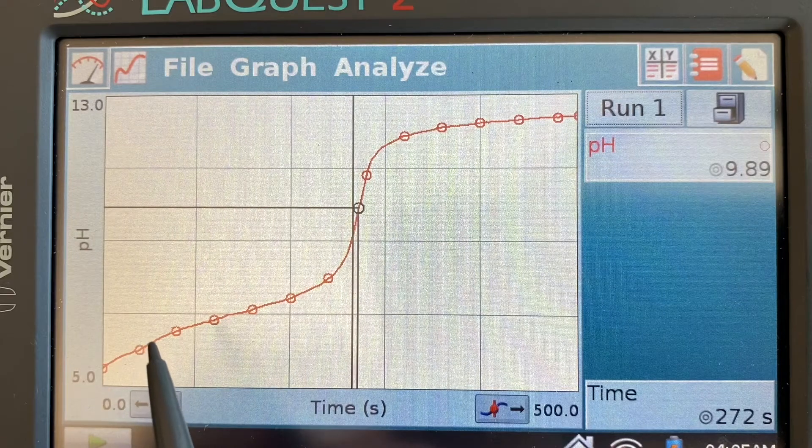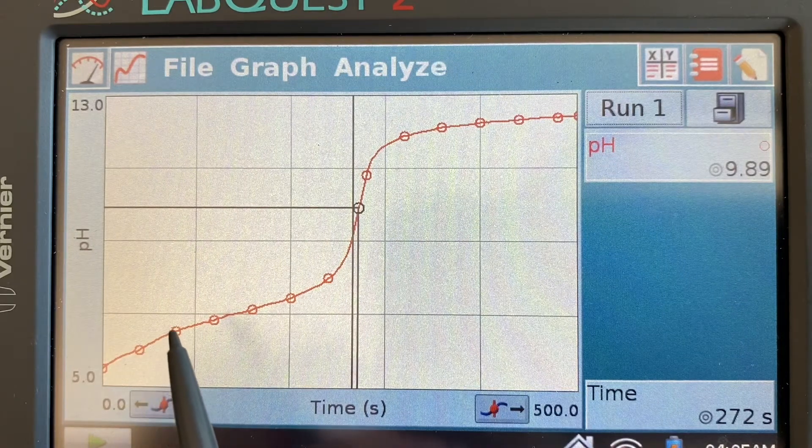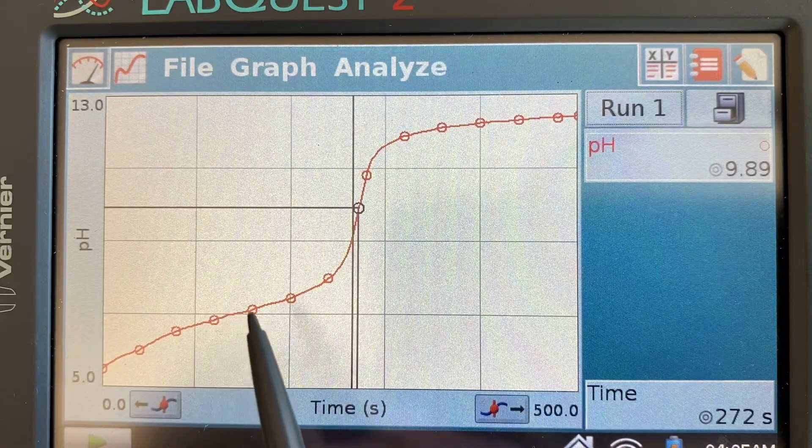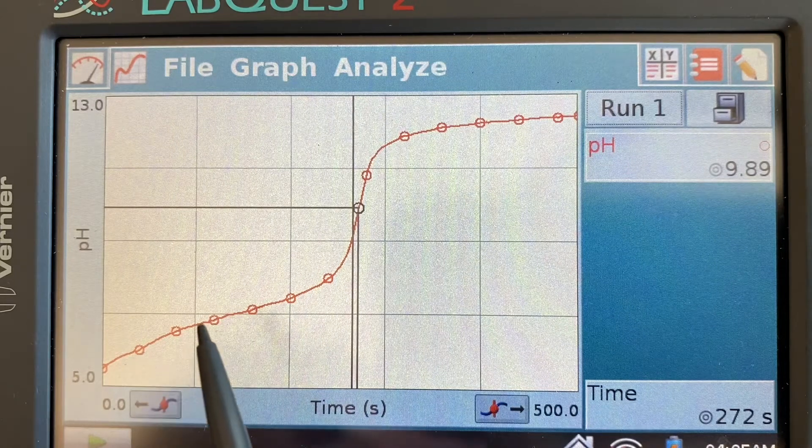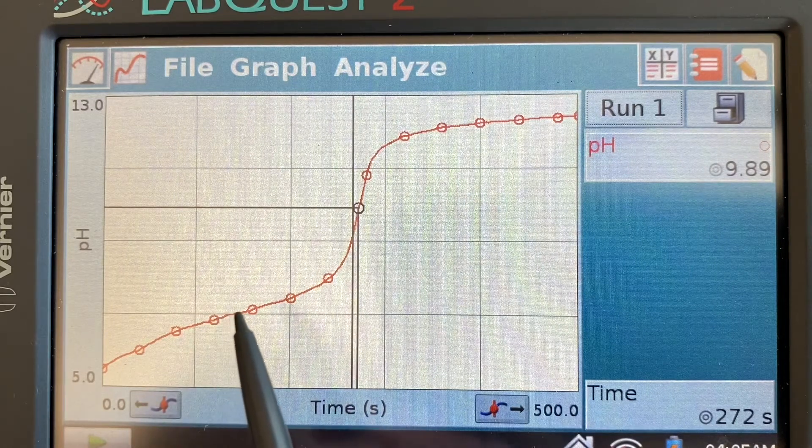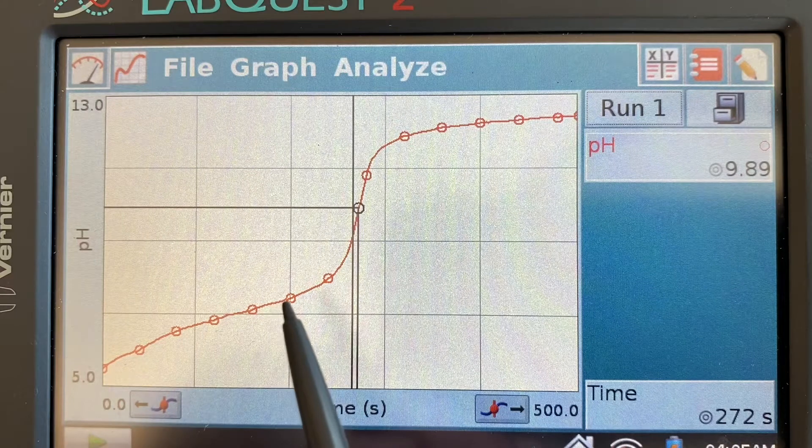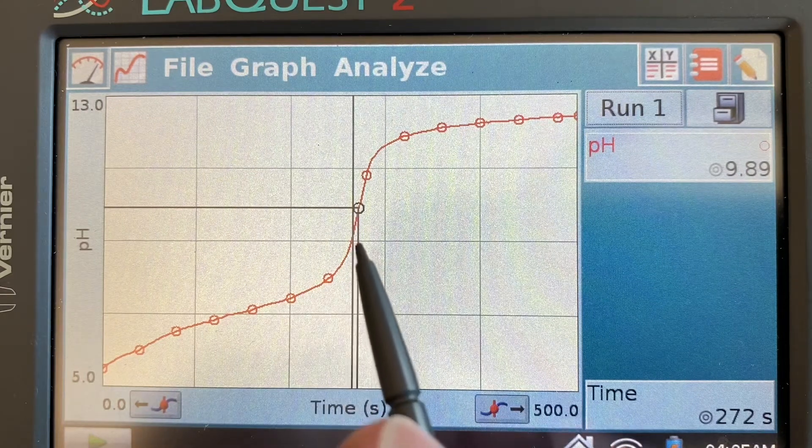And so we now have this region where we have significant concentrations of our acid left but also significant concentrations of the conjugate base being formed all the way till we get up over to here.